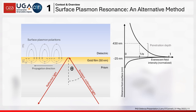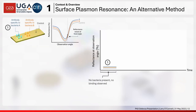This allows you to transduce physical phenomena — changes in mass or refractive index at the surface — into an optical signal. To illustrate: on a small section of a biosensor surface, we've immobilized two kinds of antibodies — Antibody A specific to Bacteria A, and Antibody B specific to Bacteria B — plus a control region. We choose a single observation angle and bounce light off the underside of the metal-dielectric boundary. At a given observation angle, we have a reflectance value that depends on the refractive index above the surface.